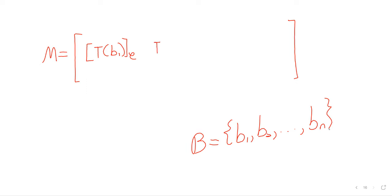The B's that are appearing in this definition are the basis vectors of V. So T of B1 with respect to C, T of B2 with respect to C, and so on down the line.